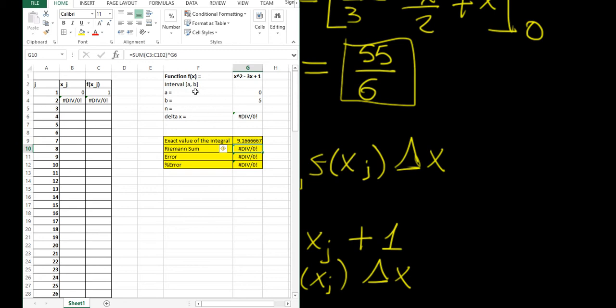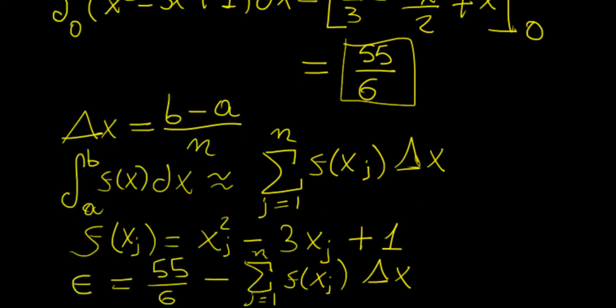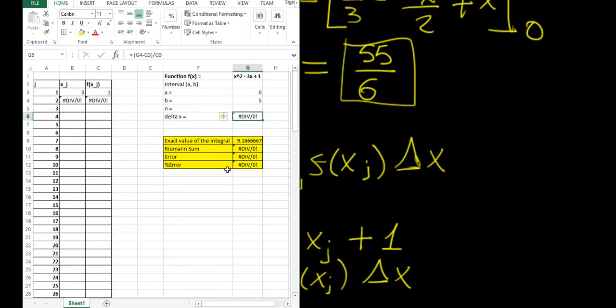I multiply that by the cell G6 which is Δx, so that's what the Riemann sum is going to be. Finally I've made two cells that calculate the error and the percentage error based on those two cells.